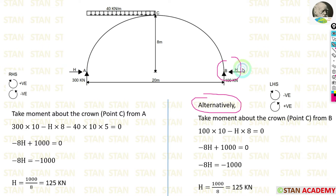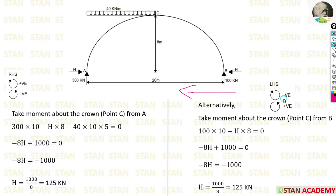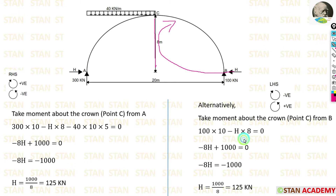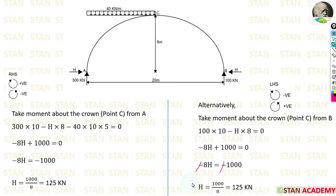We can verify by taking moment about point C from point B, moving towards the left-hand side. VB = 100 kN acts clockwise over 10 meters, and H acts clockwise over 8 meters. Solving gives −8H + 1000 = 0, so H = 125 kN. Both approaches confirm H = 125 kN — you can follow whichever is easier.